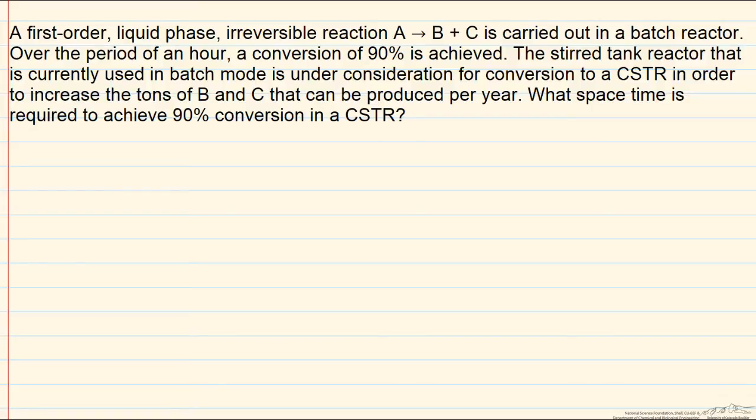In this problem, we are given information about the performance of a batch reactor for a particular reaction system. In particular, we are told that for this reaction of A going to B plus C, we achieve a conversion of 90% over the period of 1 hour.